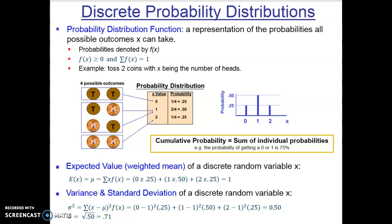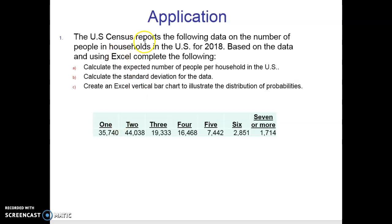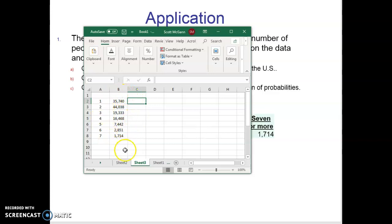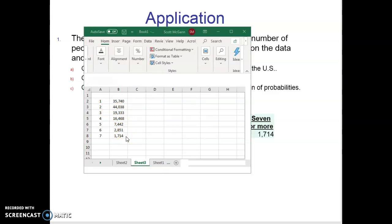Now let's do a more real-world example. The US Census reports data on the number of people in households in the US for 2018. I've taken the data and put it in Excel. The first column shows the number of people per household, and the next column shows the number of households — this data is in thousands, so 44,038 means 44,038,000 households with two people. Our next step is to find the expected value.